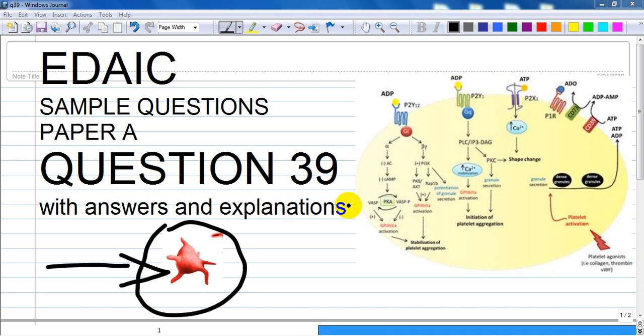Here we go, we are continuing the EDAIC sample paper A question, it's number 39. It's a question about platelet aggregation.